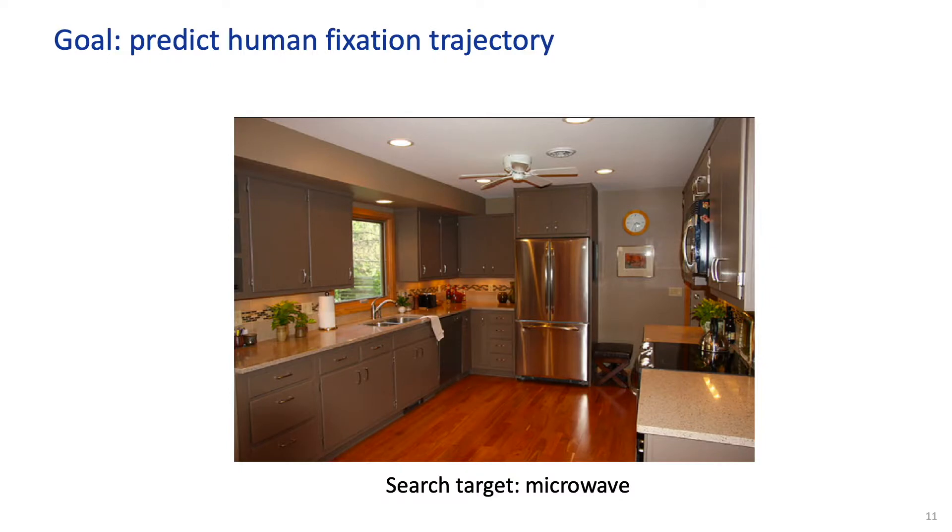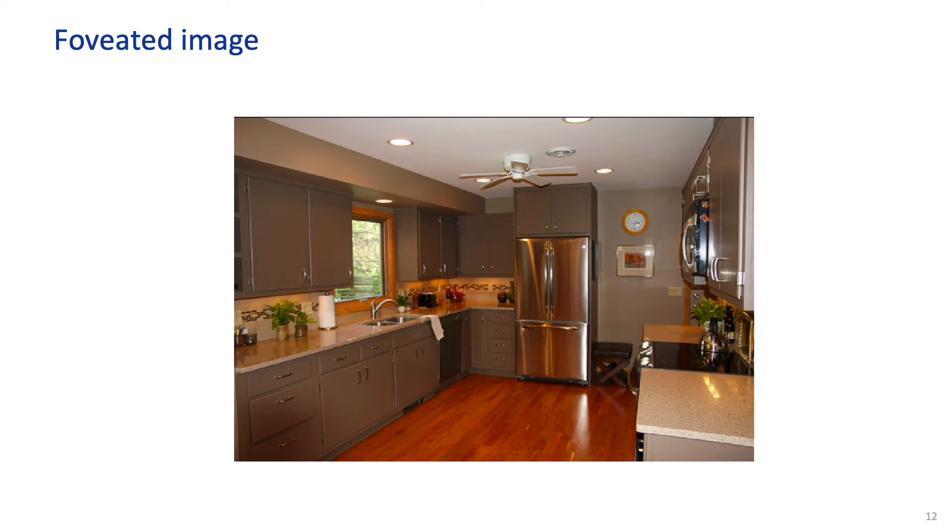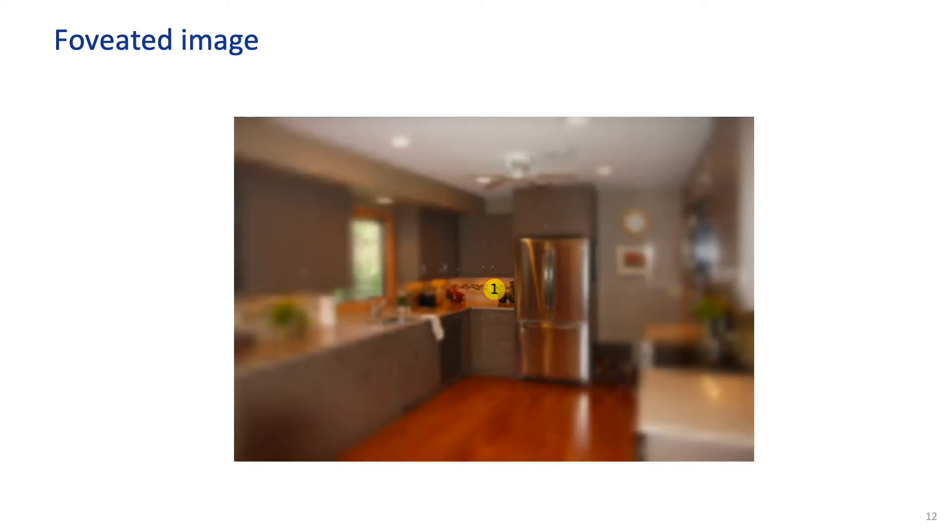Just to recap, given the image and the search target, our goal here is to predict the human fixation trajectory. Since we are modeling human gaze behavior, it is important for the model to capture the foveal property in the human vision system. In the human vision system, we observe a foveated image, which is clear at the fixated location but is progressively blurred in the periphery. In our method, we model the scan path as a sequence of locations where we choose to de-blur the pixels.